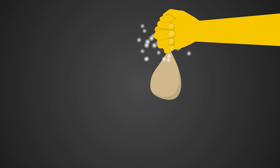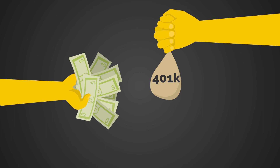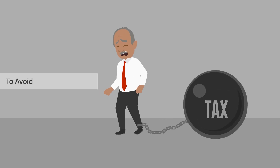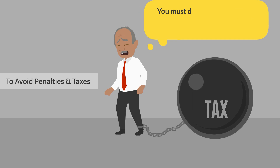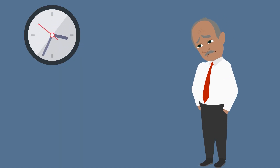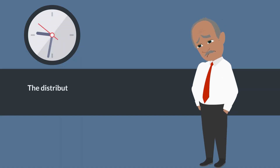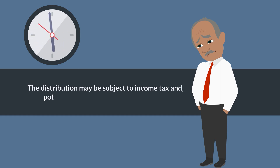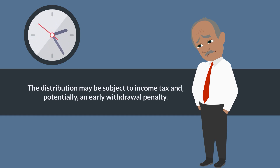In an indirect rollover, you receive the funds from your current 401k plan directly. However, to avoid penalties and taxes, you must deposit the funds into your new Fidelity account within 60 days. If you fail to complete the rollover within the time limit, the distribution may be subject to income tax and, potentially, an early withdrawal penalty if you're not yet of retirement age.